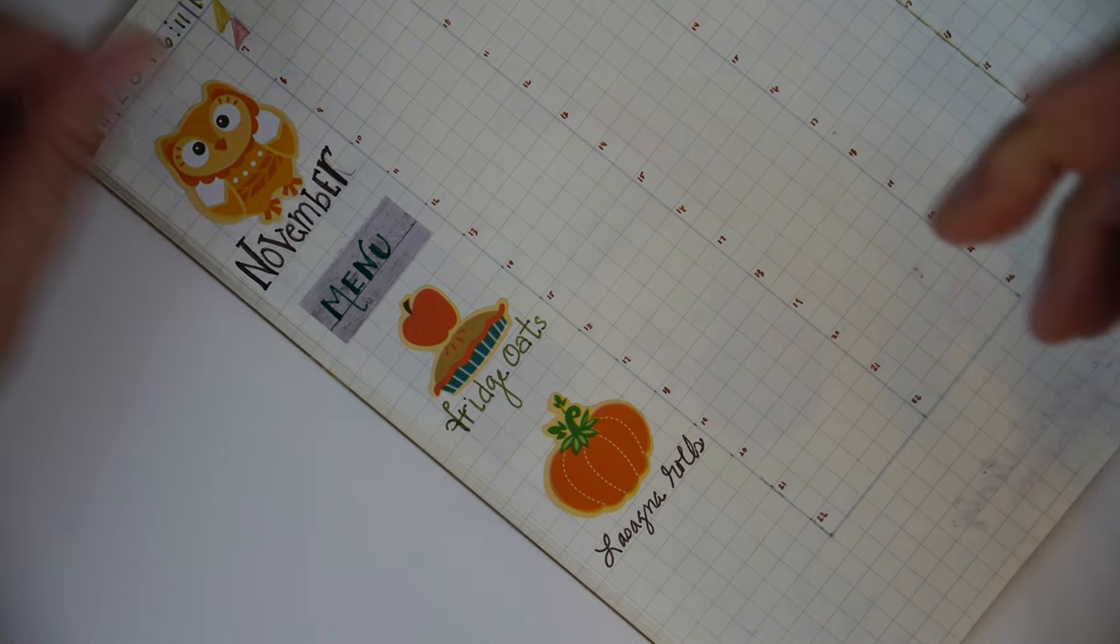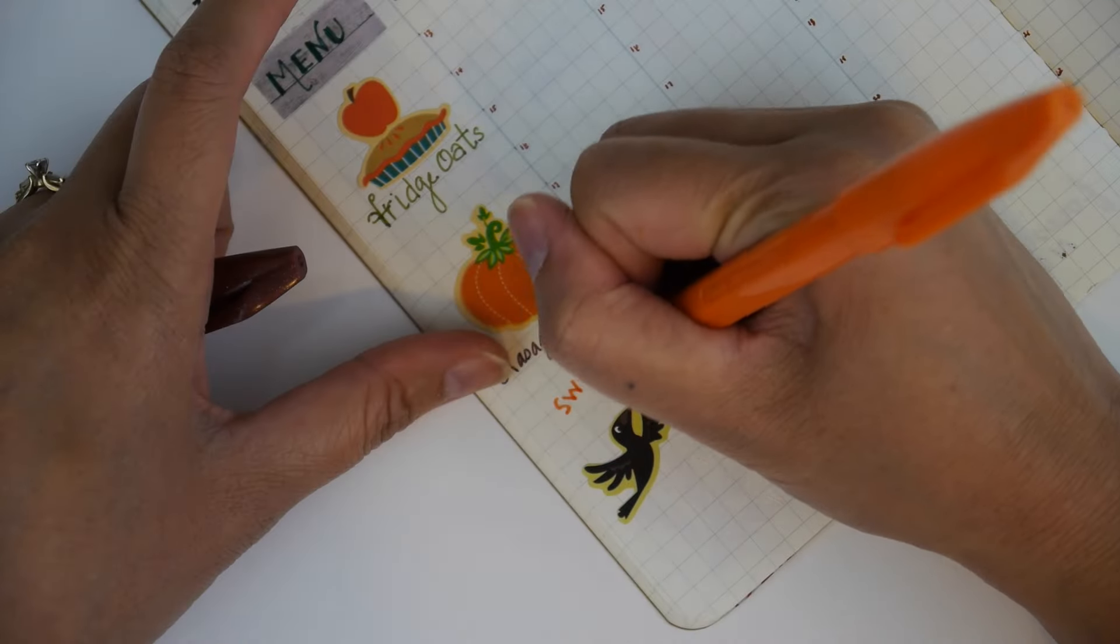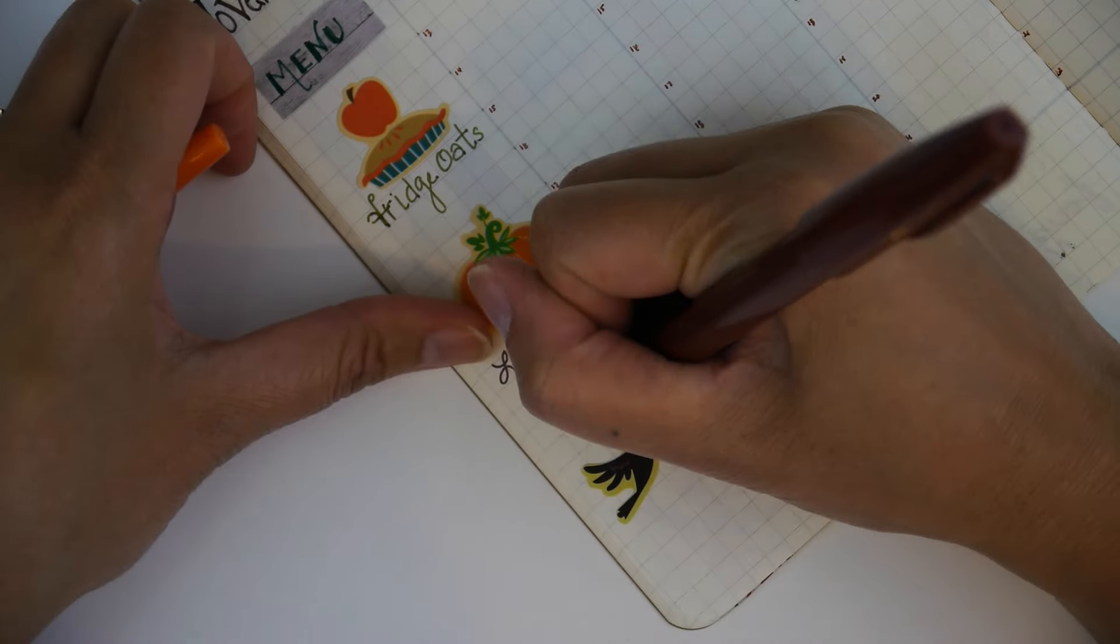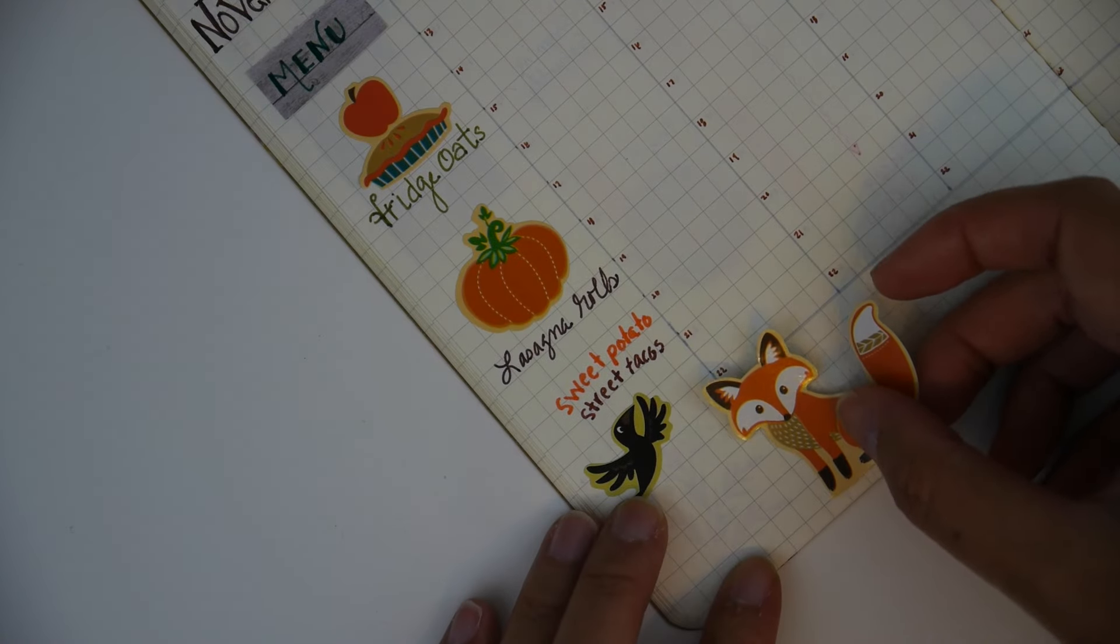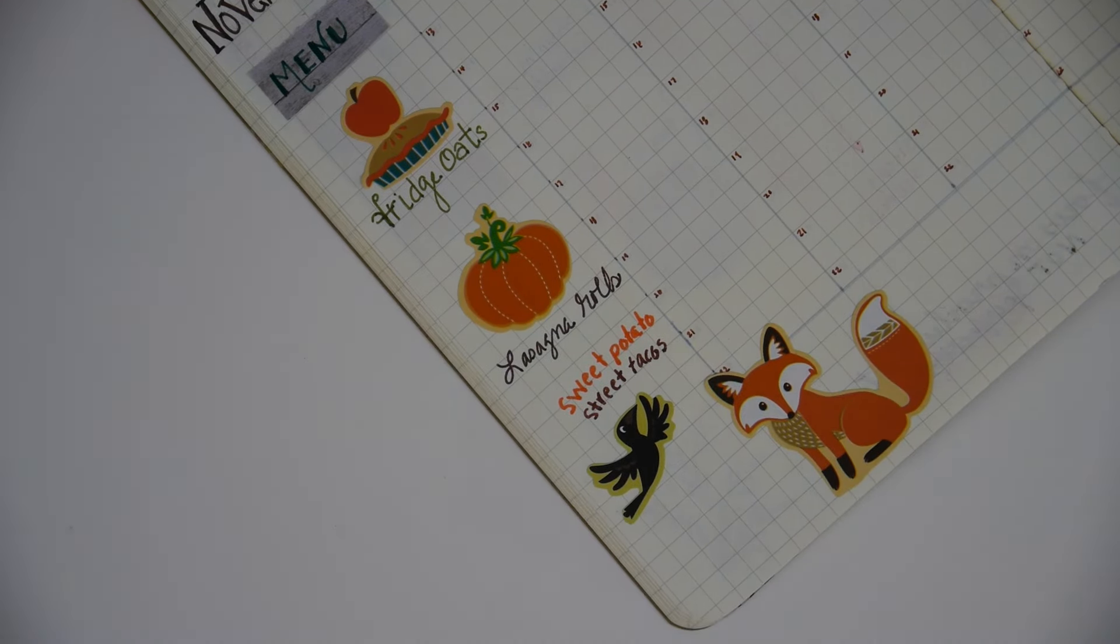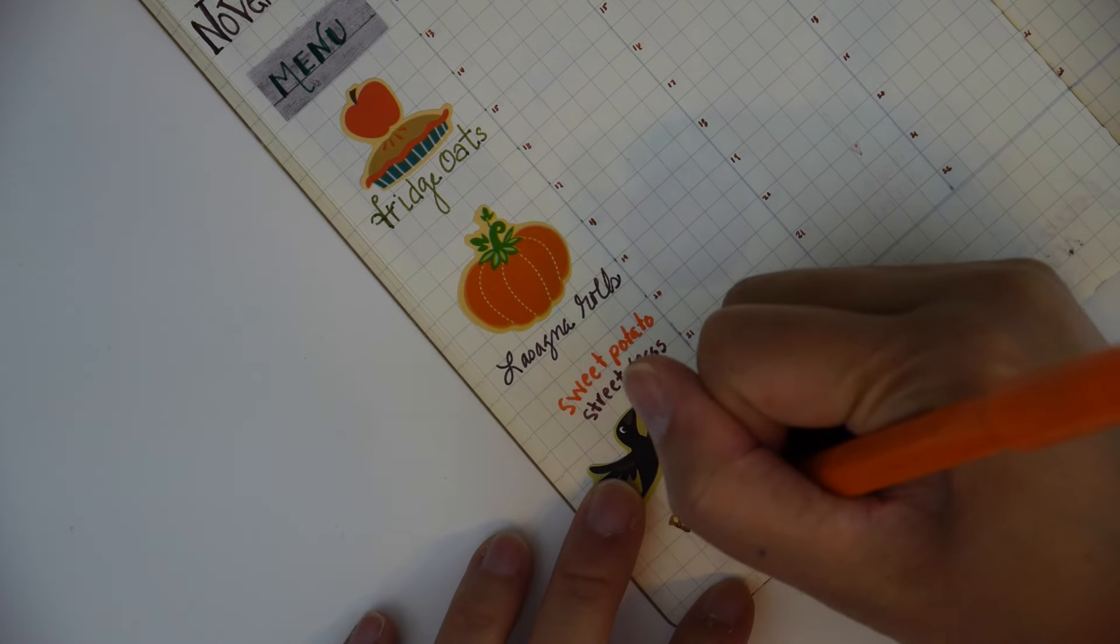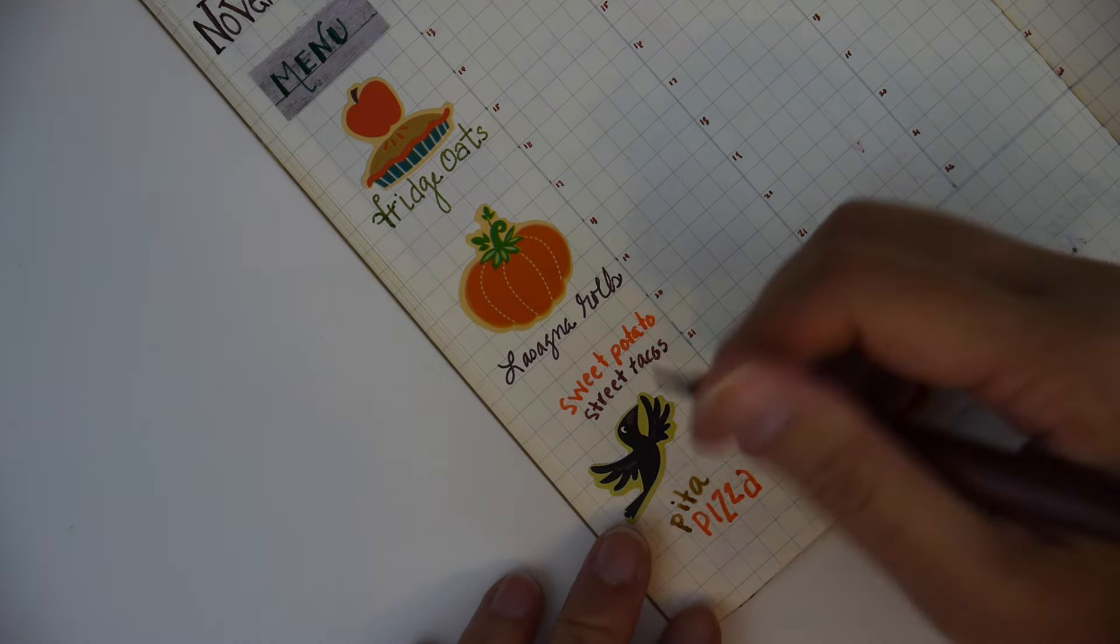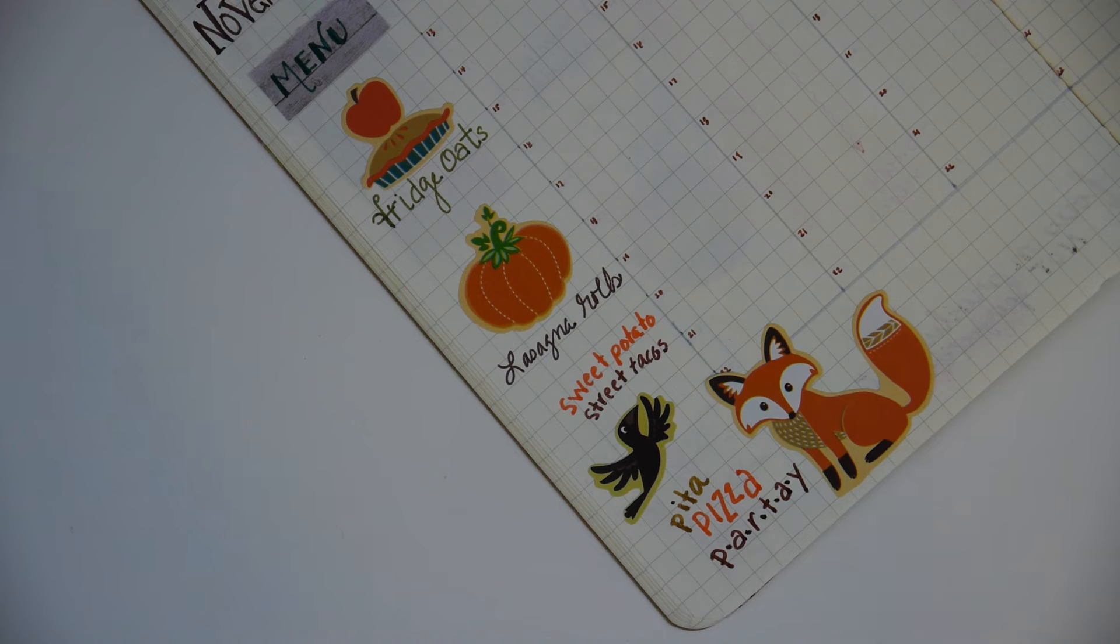You can make them once and then freeze them. And then for the next meal which is sweet potato street tacos, I didn't have anything to represent that. So I just put down this little crow to talk about it and then a fox to talk about the last item which is a pita pizza party. These are fit girl classics. They're good go-to's when you really don't know what else to do and they still taste pretty good.